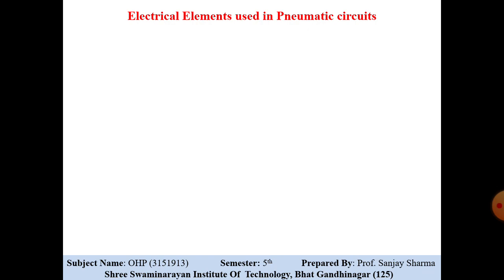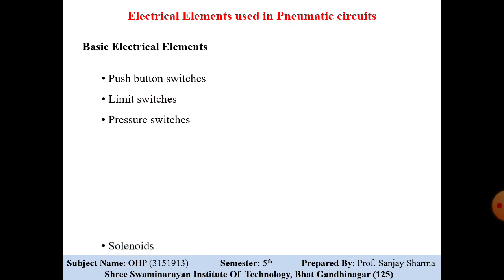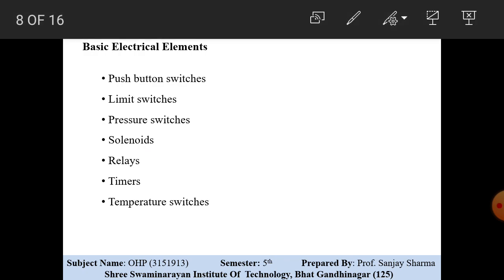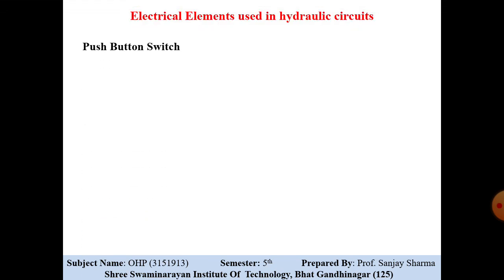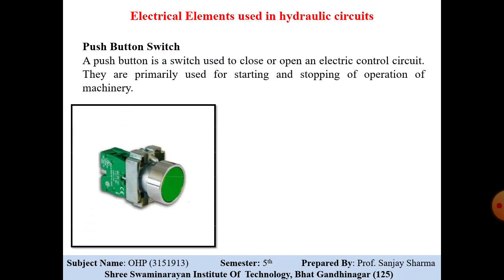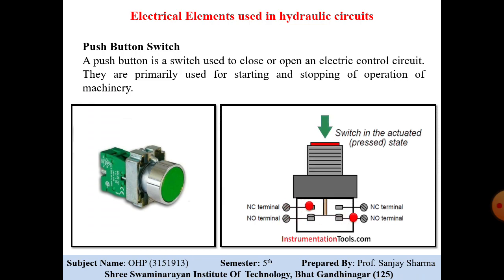Now, electrical elements used in the pneumatic system: as we have seen the electrical elements used in the hydraulic system, they are more or less similar. The basic electrical elements used in a pneumatic system include push button, limiting switch, pressure switch, solenoid, relay, timer, and temperature switch. These electrical elements used in pneumatic circuits are more or less similar to those used in hydraulic circuits. Push button switch is used to operate the system.